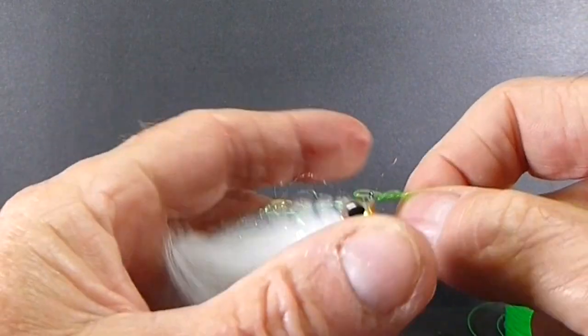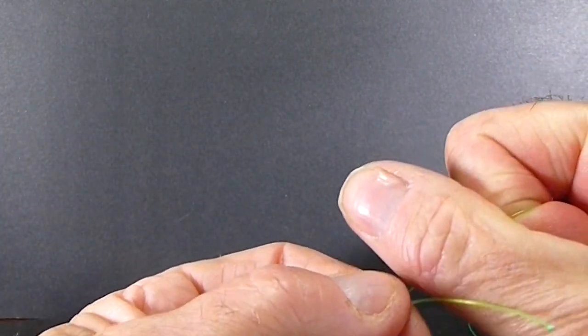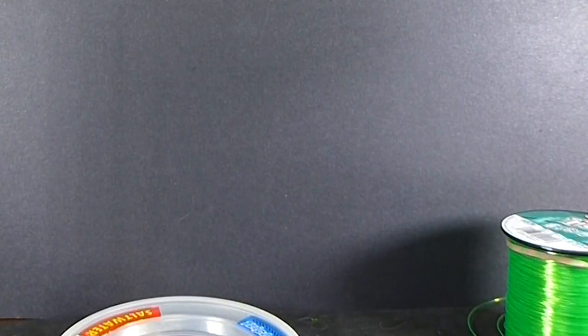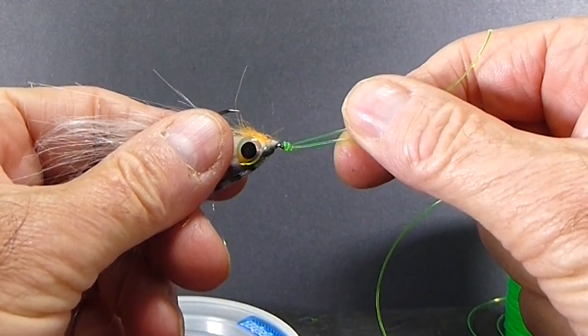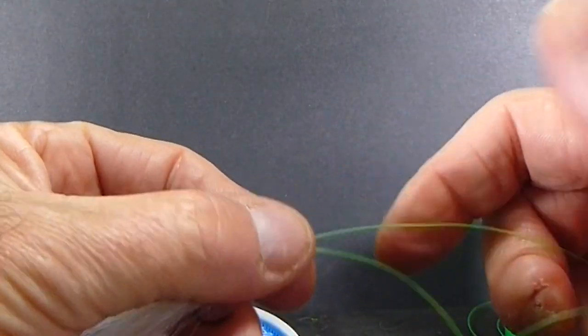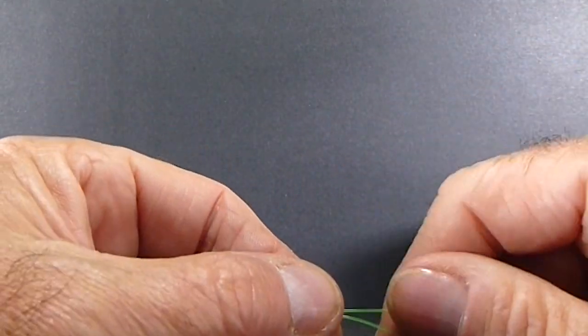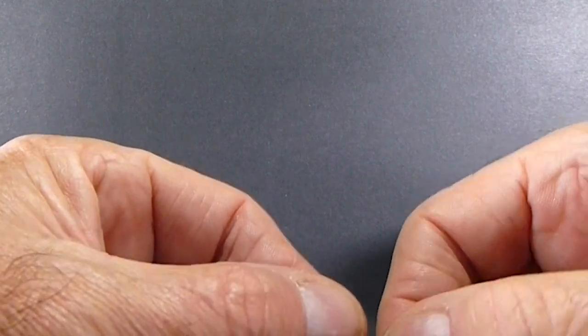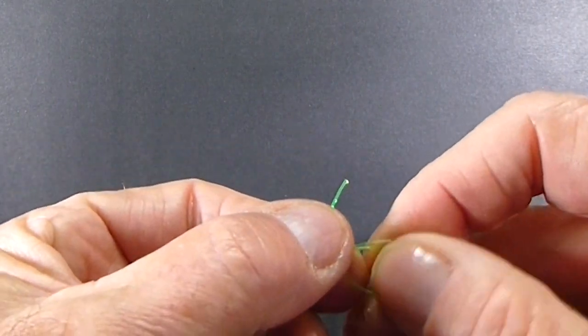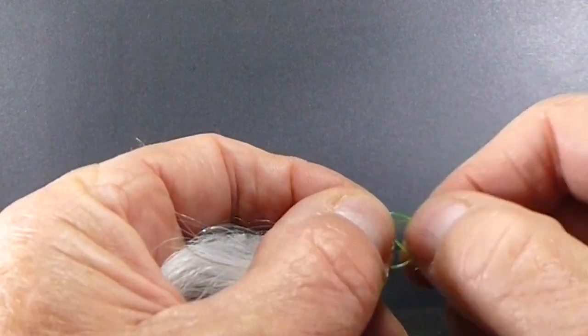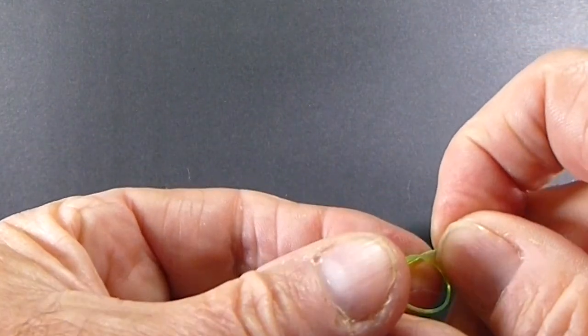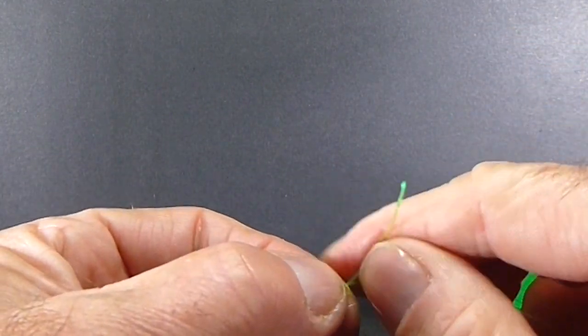I'm just going to tighten that up by pulling on the tag, and that'll tighten right up against the fly. Okay. Then we're just going around. This is the standing line in my hand here. We've got the tag. I'm going to go around that one time. Just around the standing line one time. Basically a granny knot. And you pull that down.